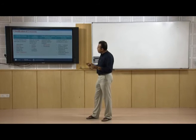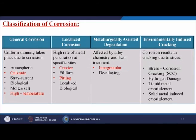There are several types of corrosion based on how or where they occur. First is general corrosion, meaning uniform thinning takes place due to corrosion. Sub-types include: atmospheric, galvanic, stray current, biological, molten salt, and high temperature corrosion. These are all generally seen in day-to-day life.